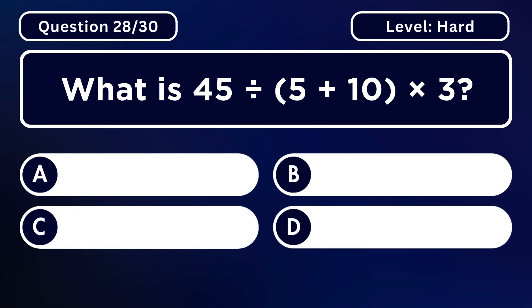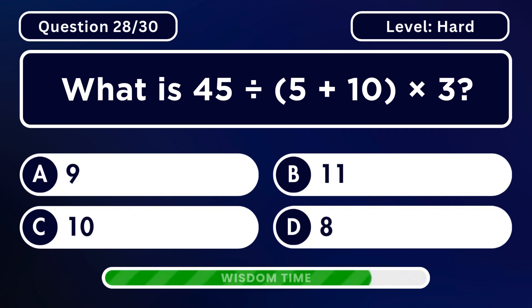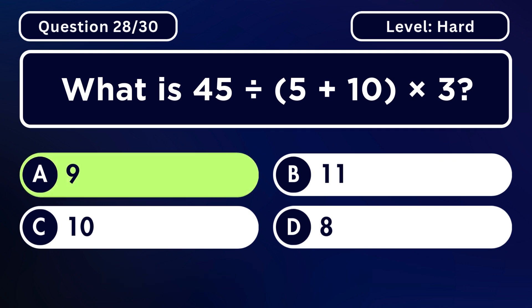What is 45 divided by the sum of 5 and 10 multiplied by 3? Answer D. 9.